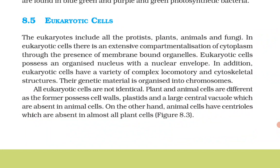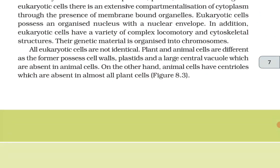Eukaryotic cells: the eukaryotes include all the protists, plants, animals, and fungi. In eukaryotic cells there is extensive compartmentalization of cytoplasm through the presence of membrane-bound organelles. Eukaryotic cells possess an organized nucleus with the nuclear envelope. They have a variety of complex locomotory and cytoskeletal structures, and their genetic material is organized into chromosomes. Plants and animal cells differ — the former possess cell walls, plastids, and a large central vacuole, which are absent in animal cells. Animal cells have centrioles, which are absent in almost all plant cells.